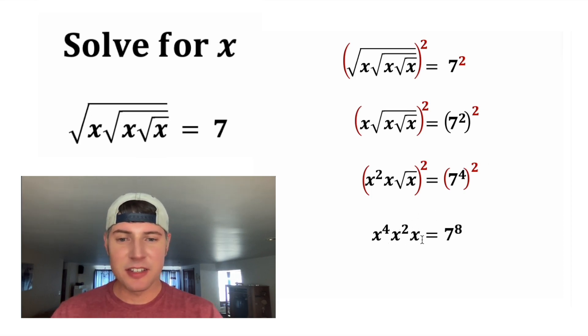On the left hand side, this x is the same thing as x to the 1. So now we can just add these exponents. 4 plus 2 plus 1 is 7. So this side is going to be x to the 7th.